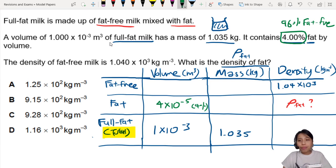Let's do the same thing for fat-free. So fat-free would be 96%. Most of the milk is fat-free. So that will give me about 9.6 times 10 to the negative 4. This is our 96% of volume.